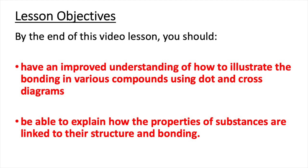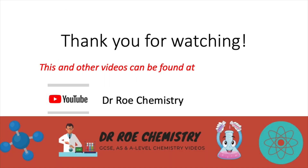That concludes this video lesson. After watching, you should now have an improved understanding of how to illustrate bonding in various compounds using dot and cross diagrams, and you should also be able to explain how the properties of substances are linked to their structure and bonding. Thank you for watching. This and other GCSE, AS, and A-level chemistry videos can be found on our YouTube channel, Dr O Chemistry.